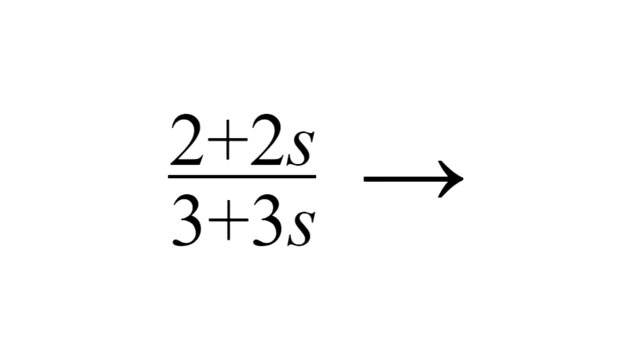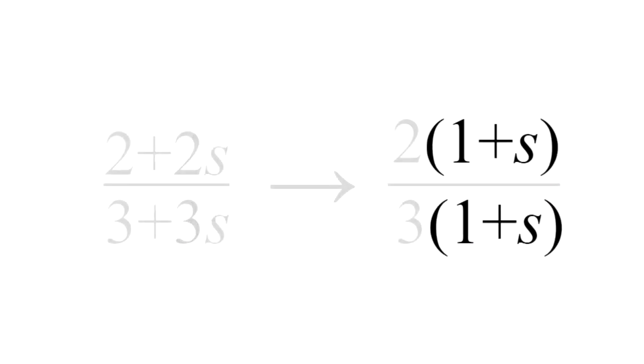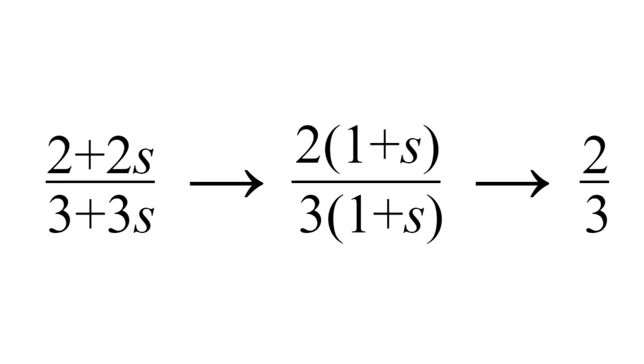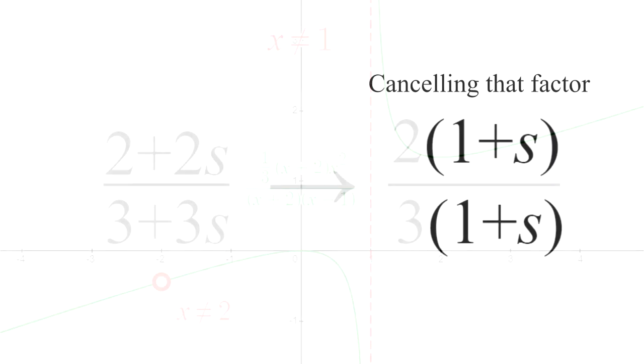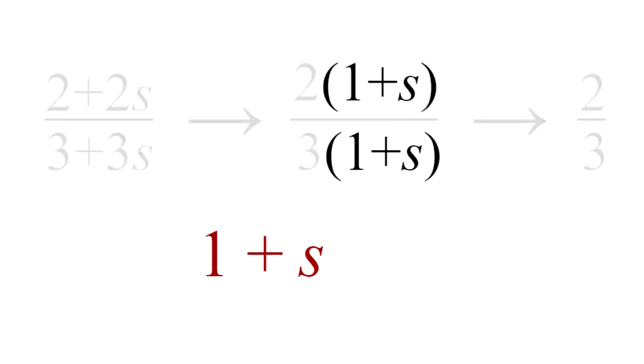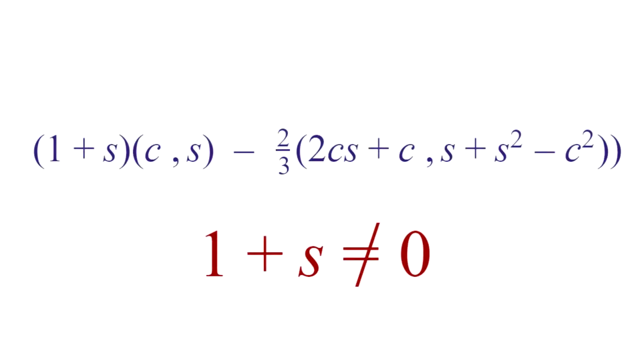From there, I cancelled a 1 plus s on both top and bottom, reducing it to 2 thirds. As you may know from rational functions, cancelling that factor leaves the condition of 1 plus s not equal to 0 for the evolute parameter.